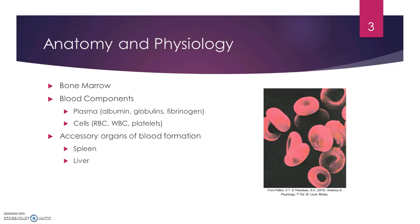Anatomy and physiology: the major components include bone marrow, which leads into your blood components such as plasma — which includes albumin, globulins, and fibrinogens — and what we talk about more commonly, which are the cells: the RBCs, the WBCs, and the platelets.